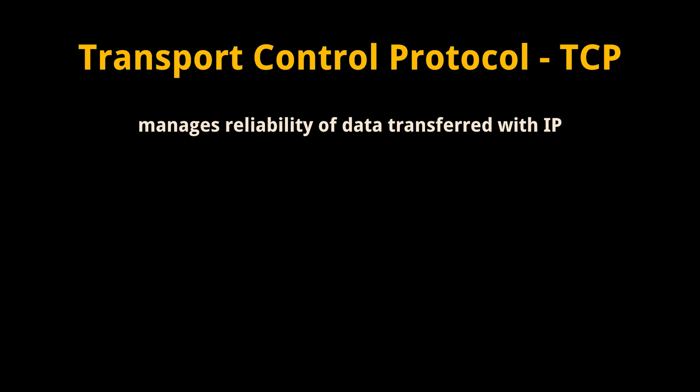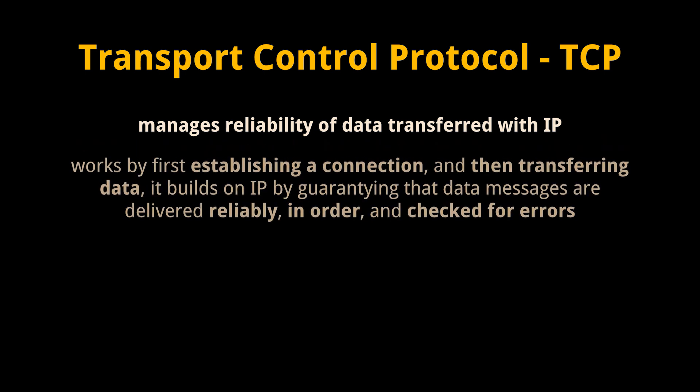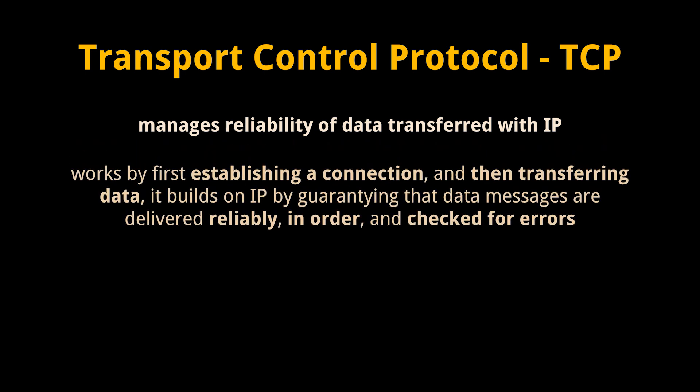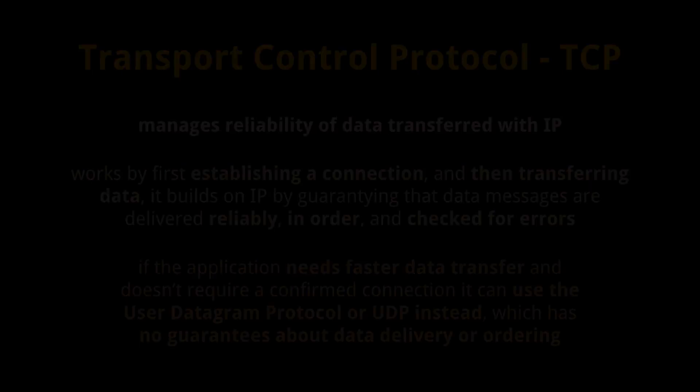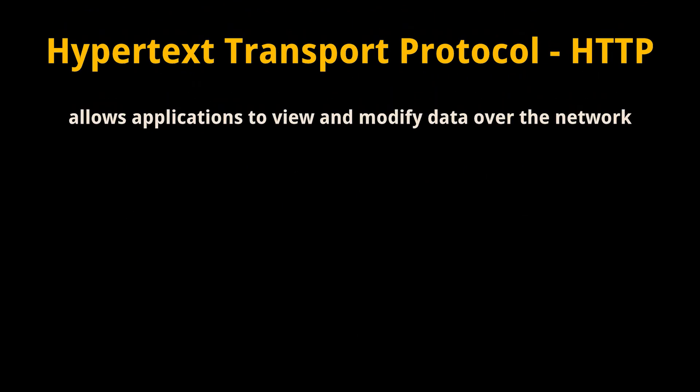Next is the Transmission Control Protocol, or TCP, which manages reliability of data transferred with IP. TCP is defined in the transport layer of the TCP/IP model and corresponds to approximately layer 4 of the OSI model. TCP works by first establishing a connection between the client and server and then transferring data. It builds on IP by adding guarantees that data messages are delivered reliably, in order, and checked for errors. If the application needs faster data transfer and doesn't require a confirmed connection, it can use the User Datagram Protocol, or UDP, instead. UDP works at the same layer as TCP but has no guarantees about data delivery or ordering, which works well for situations like broadcasting.